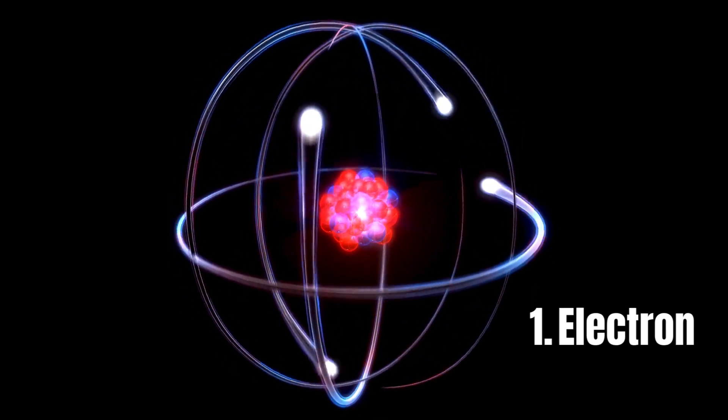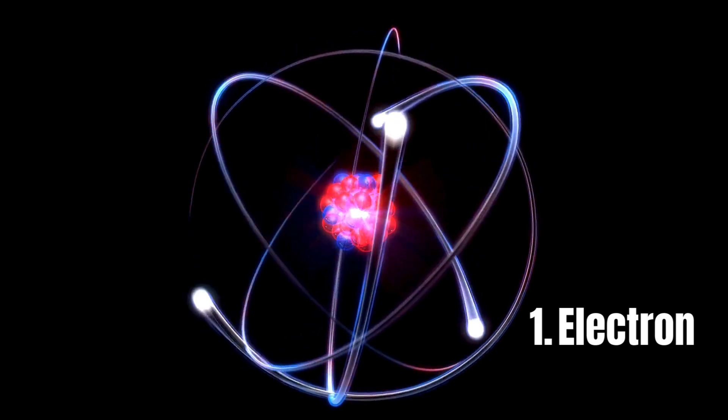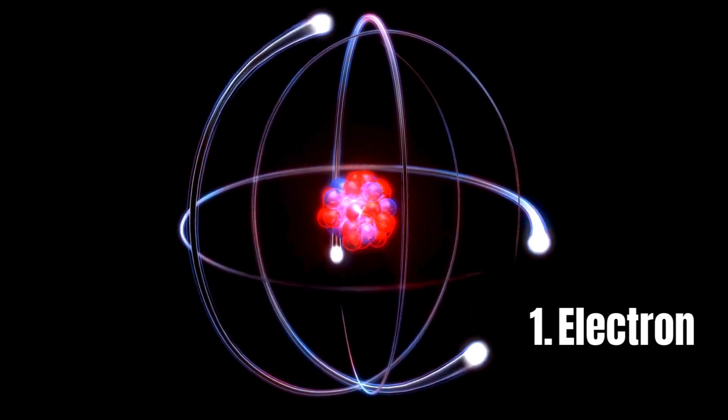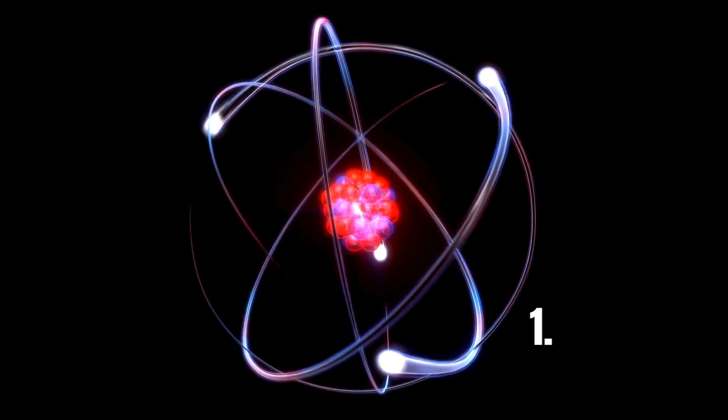An electron is an elementary particle with a negative electric charge found orbiting the nucleus of atoms. Electrons play a crucial role in forming chemical bonds and conducting electricity.